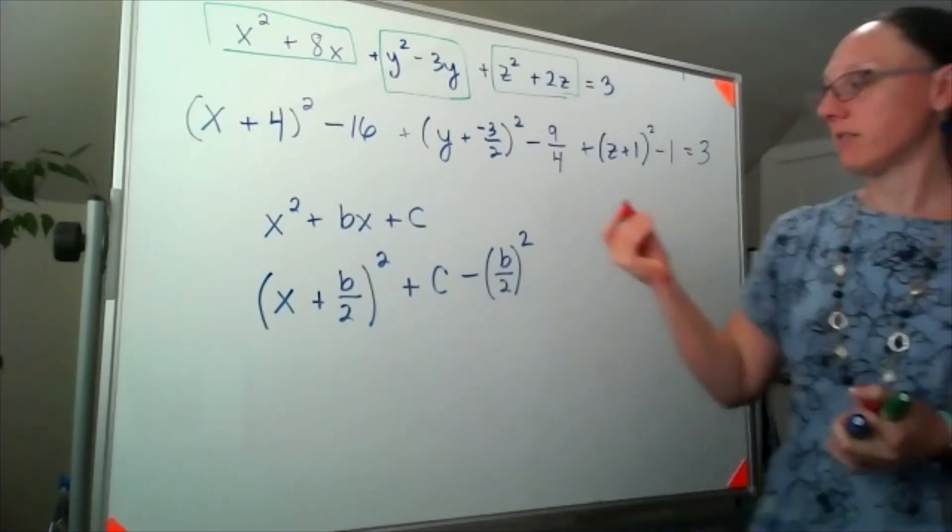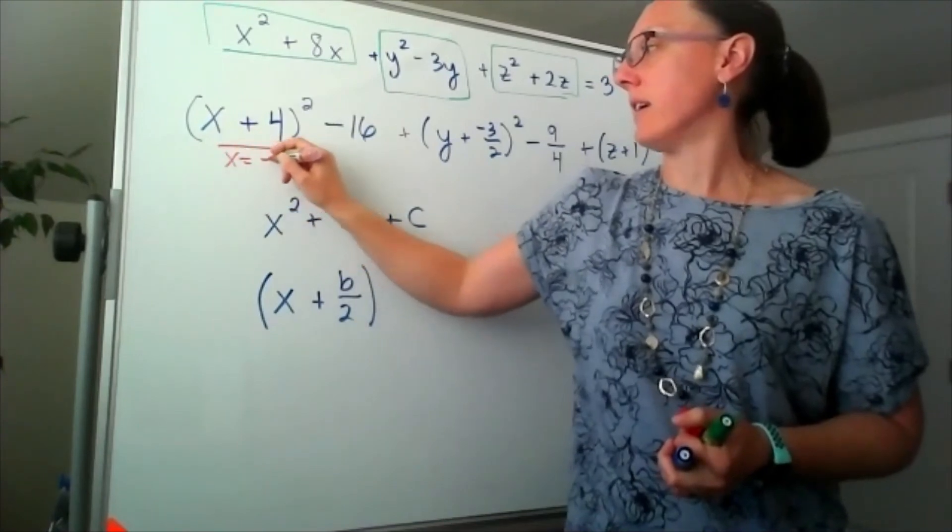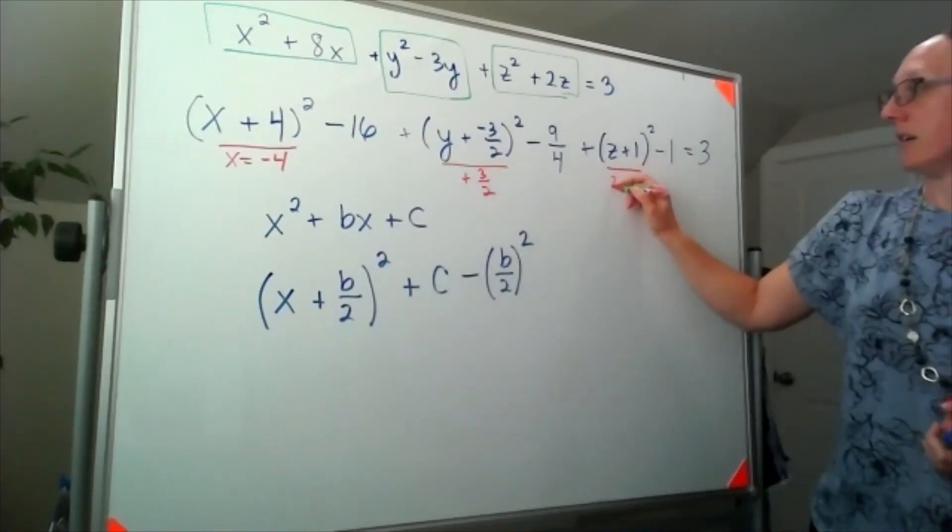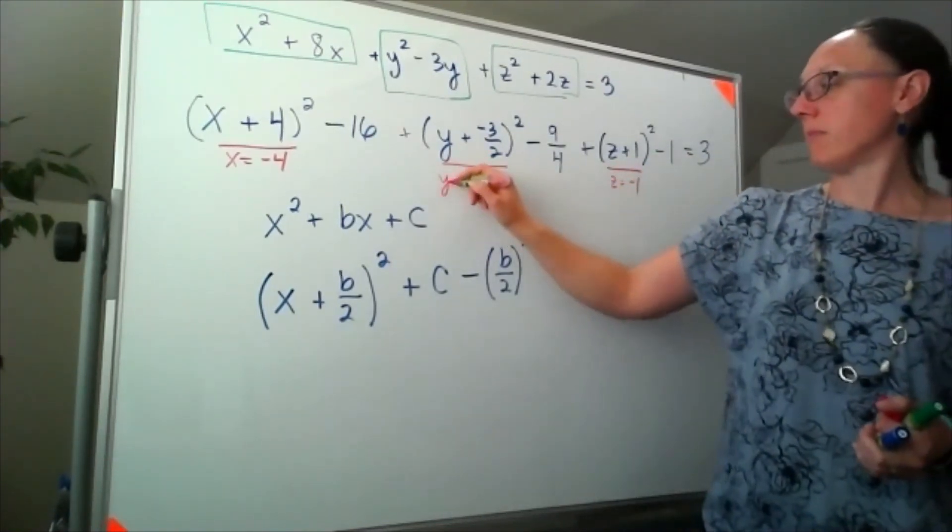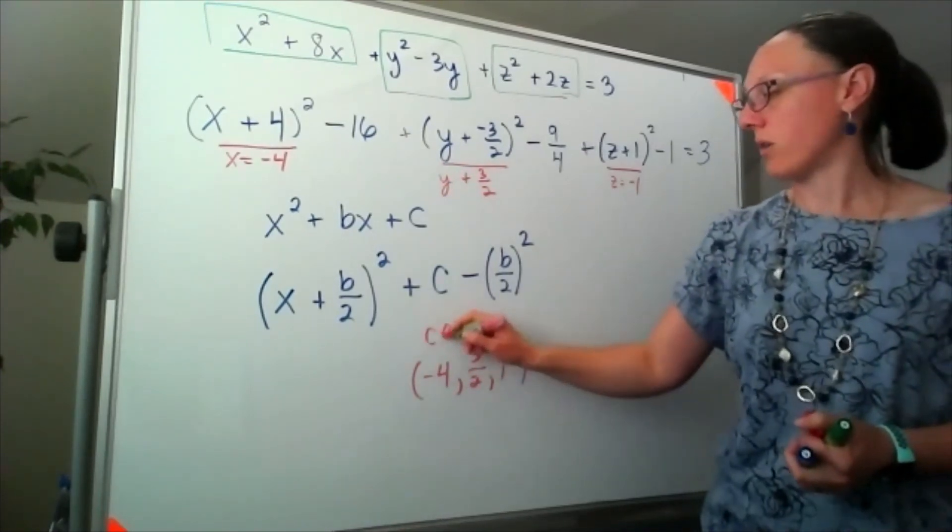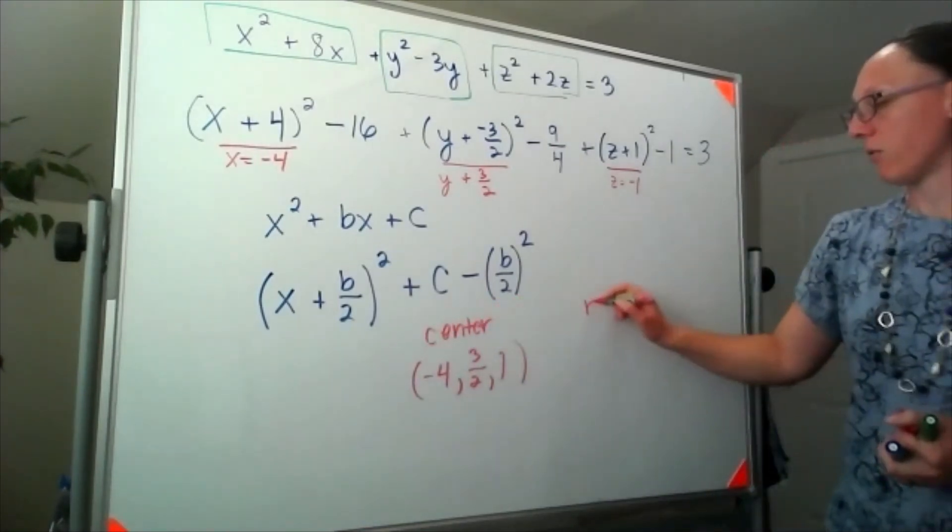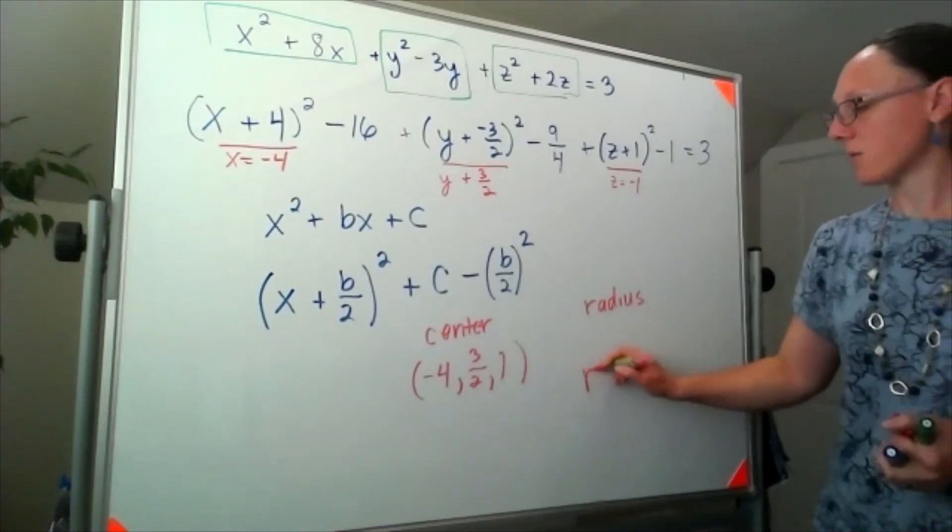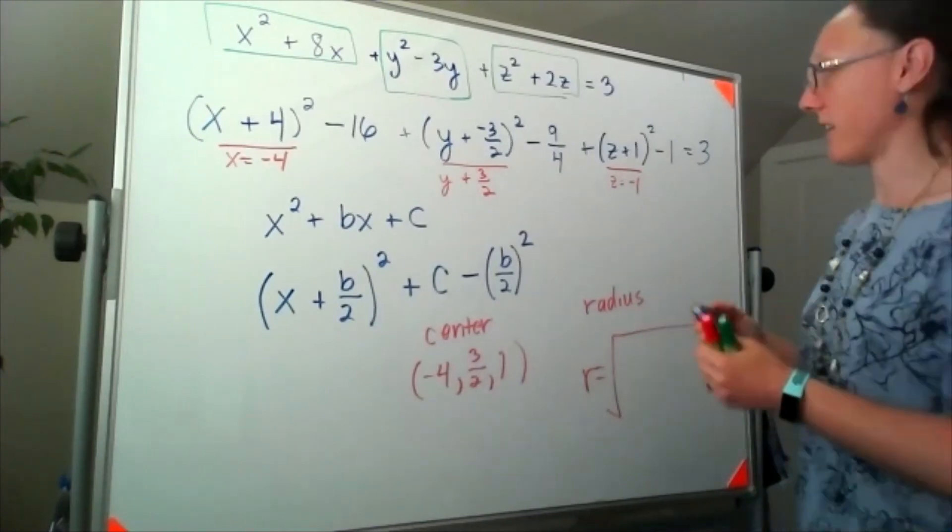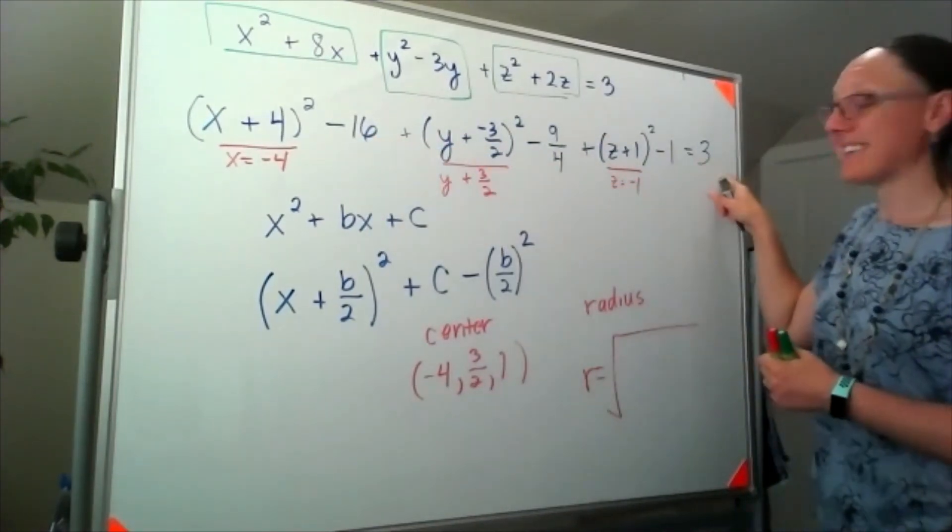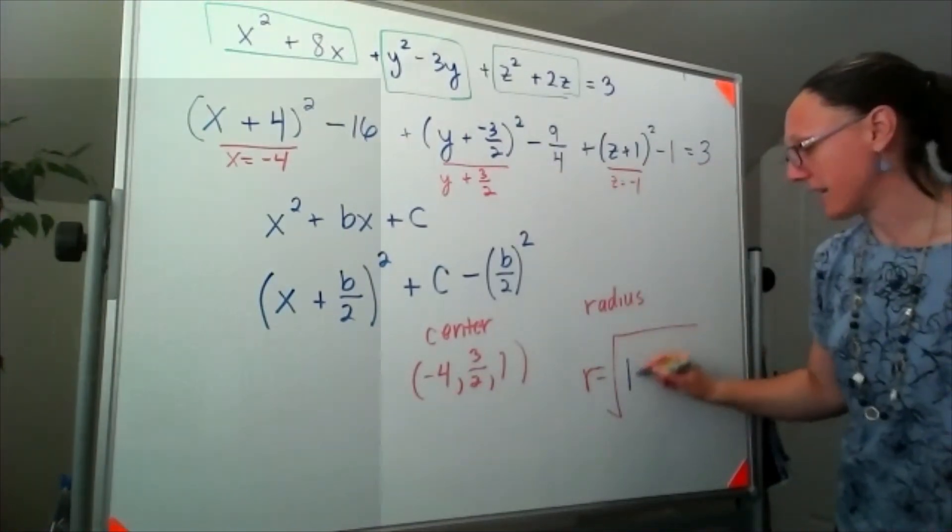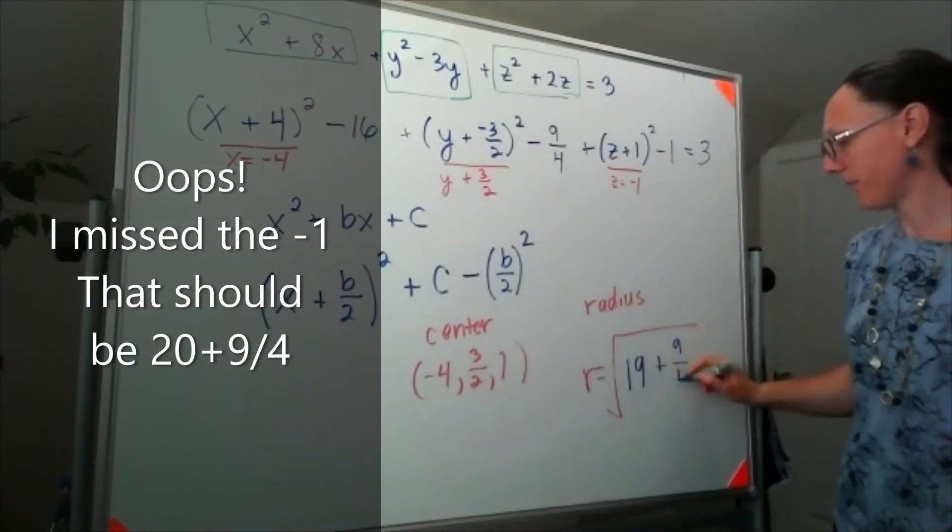Well, we can now pull off our center. So our center is going to be at negative 4, positive 3 halves, negative 1. So negative 4, 3 halves, negative 1 for our center. And for the radius, I'm going to skip straight to the radius is the square root of whatever ends up on the right-hand side when I fix the numbers. So I've got 3. I'm going to add 16 to that. So I'll be at 19. And then add 9 fourths. I'm going to be lazy and just call that 19 plus 9 fourths.